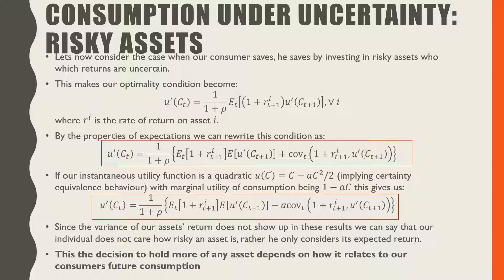If our instantaneous utility function is quadratic — a different case from before — this implies certainty equivalence behavior, as discussed in the previous video. With the marginal utility of consumption being 1 + AC, instead of adding the covariance we now have minus A times the covariance between (1 + the rate of return on this risky asset in period T+1) and the marginal utility from consumption in period T+1. Since the variance of asset returns does not appear in these results, our individual does not care about how risky an asset is — he only cares about the expected return. The decision to hold more of any asset depends only on how its rate of return relates to future consumption.